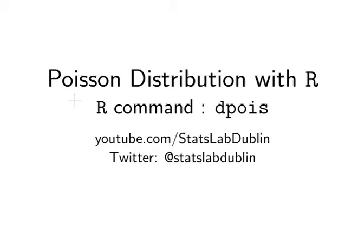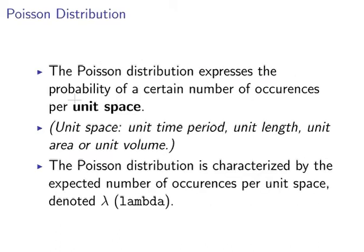In this presentation we're going to look at the Poisson distribution and in particular the dpois command. Now the Poisson distribution expresses the probability of a certain number of occurrences per unit space.